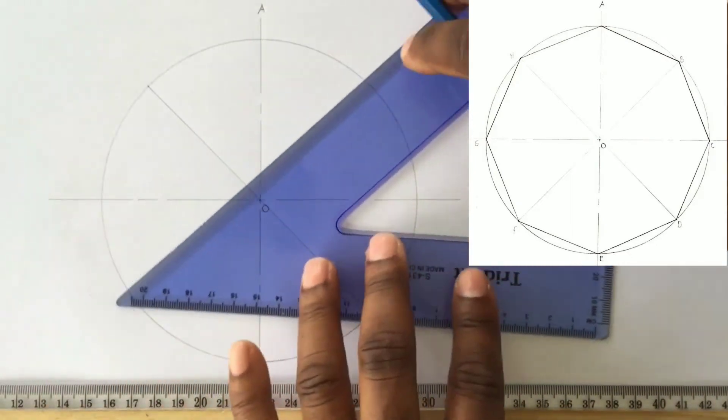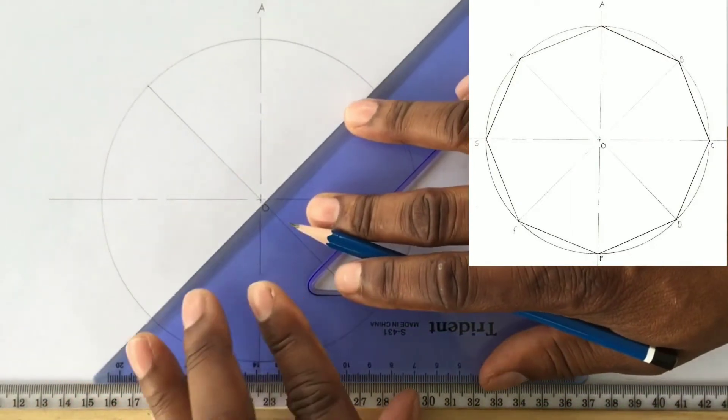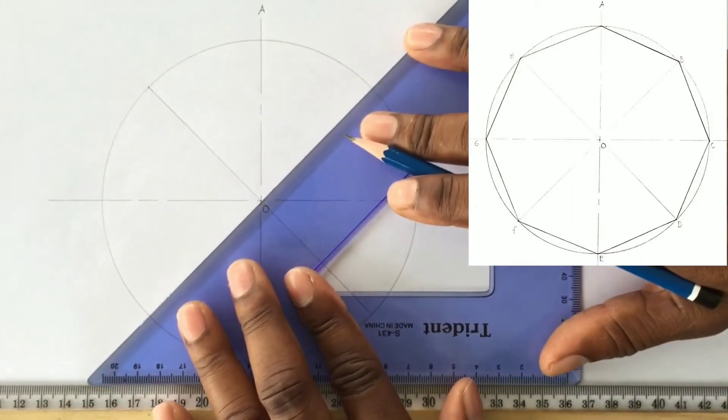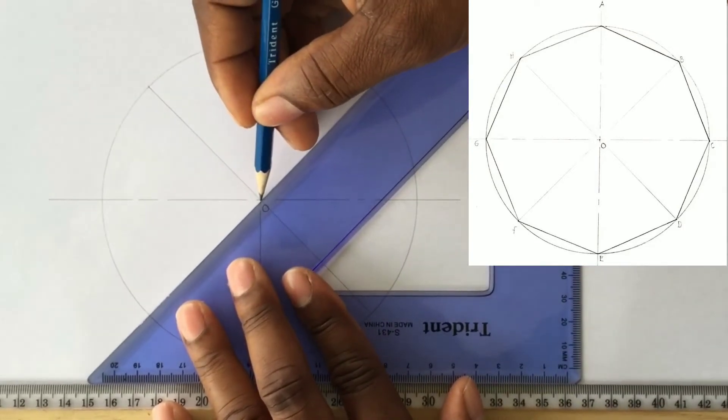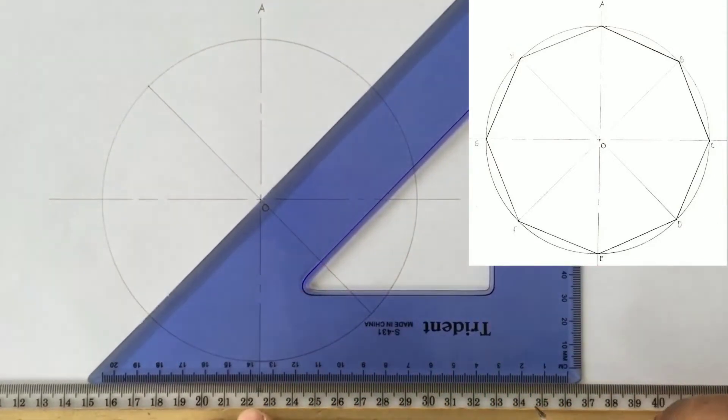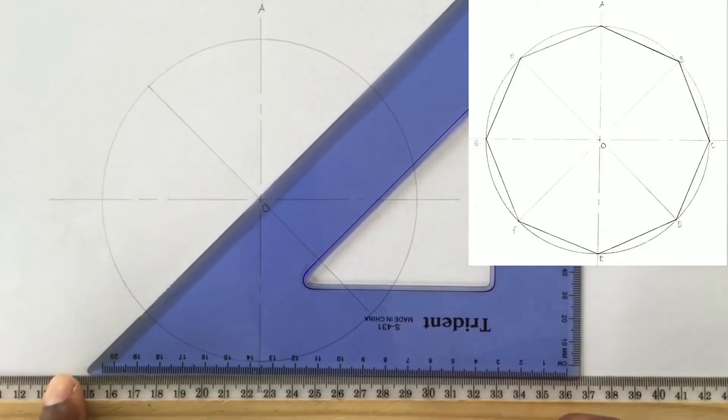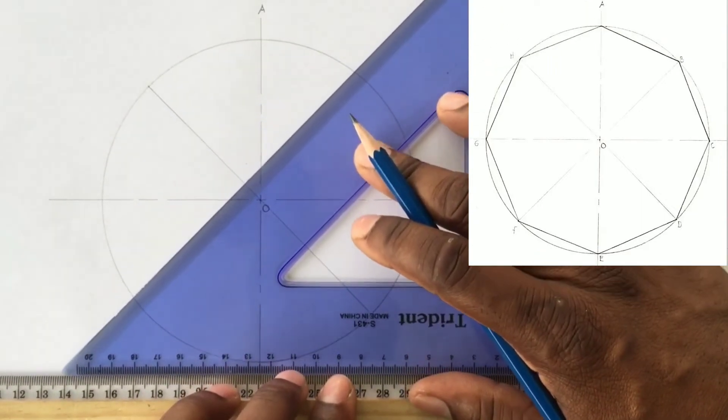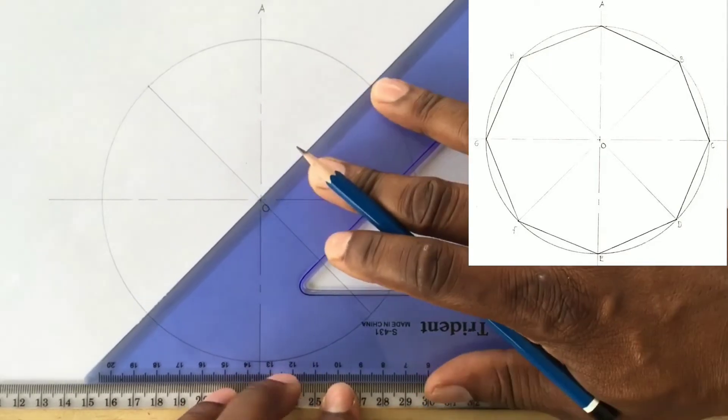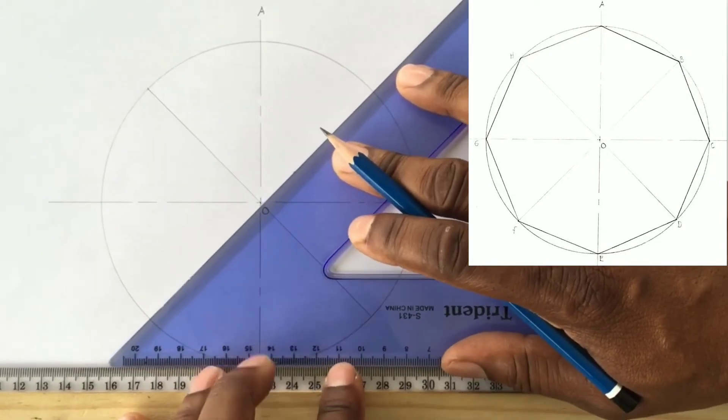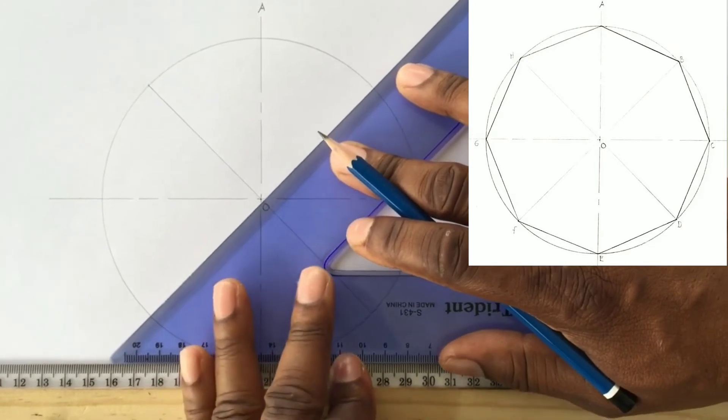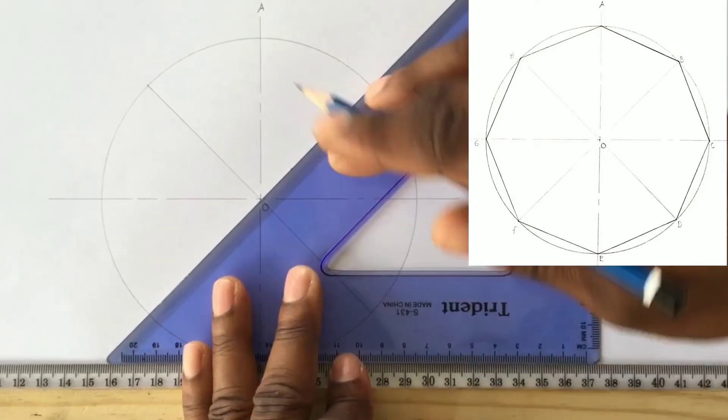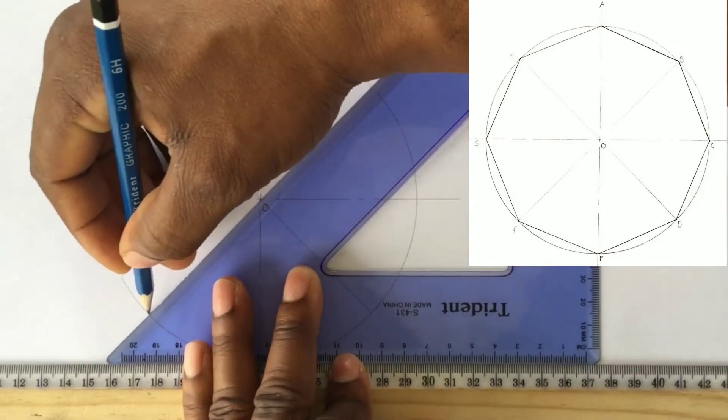You will then use your 45 set square to draw a line to touch the circumference and pass through the center of your circle on the opposite side. Ensure your T square is held firm against your drawing table. The 45 set square should also be sitting firm on top of your T square.